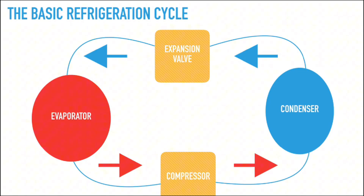In this schematic we can see how the four main components are arranged within the basic refrigeration cycle — the evaporator, the condenser, the compressor, and the expansion valve. The flow starts with the evaporator and goes counterclockwise towards the compressor, condenser, and expansion valve. This is the sequence of operation for the refrigeration cycle; keep in mind it always goes counterclockwise. In the following slides we'll examine exactly what happens at every single stage.